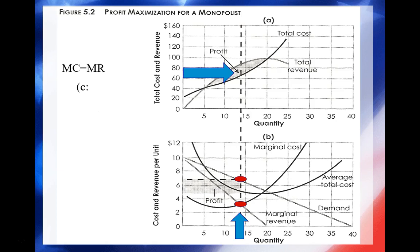Chart B shows where MC equals MR, as opposed to where demand — the price demand — would be for those items. Even though total revenue rises beyond 13 units, the profit, shown as the gray area in the middle, is going to fall because cost rises faster. The intersection of marginal revenue and marginal cost is the profit maximization point for a monopolist.